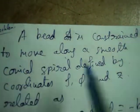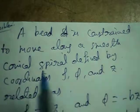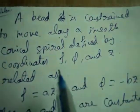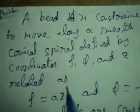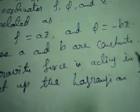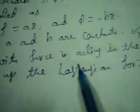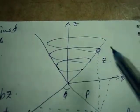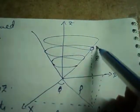The problem is a bead constrained to move along a smooth conical spiral defined by coordinates rho, phi, and z, related as rho equal to az and phi equal to minus bz, where a and b are constants. A gravity force acts in the negative z direction. We have to set up the Lagrangian for the system. This is the spiral path followed by the bead of mass m.